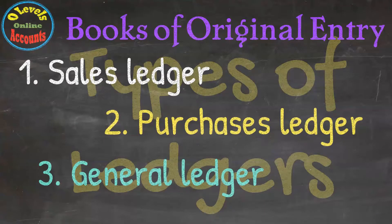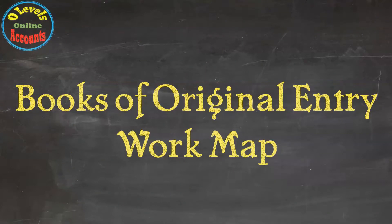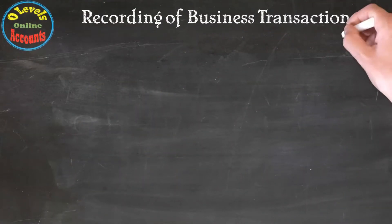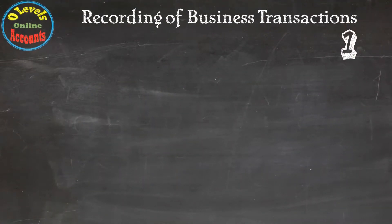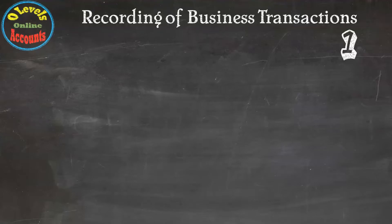Let's see the working map of Books of Original Entry and its placement in working. The first step in the working map is recording business transactions in related T-accounts and getting debit or credit balances from them. This is step number one, and we had a detailed discussion in our previous videos. If you missed these, kindly check it with the referred video link in the upper corner of the slide.